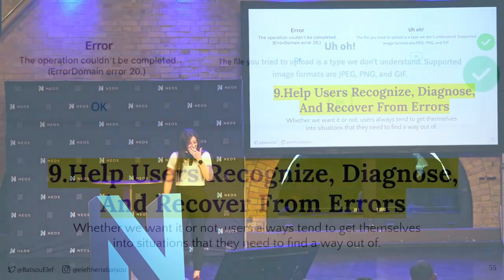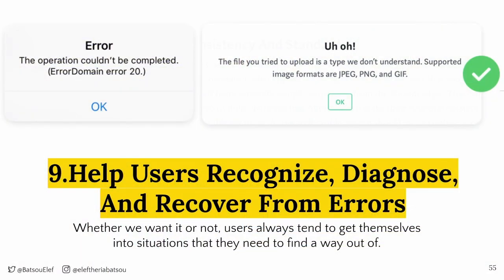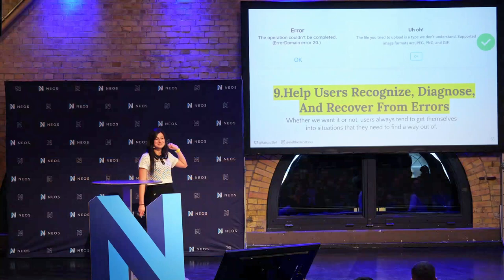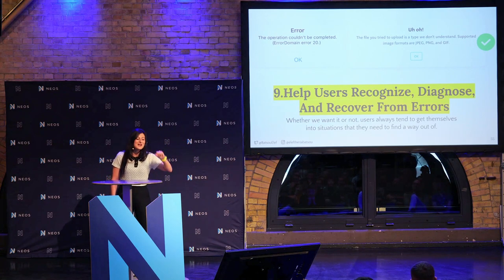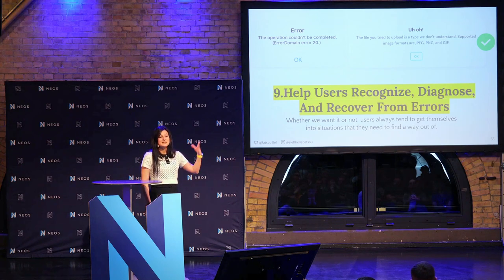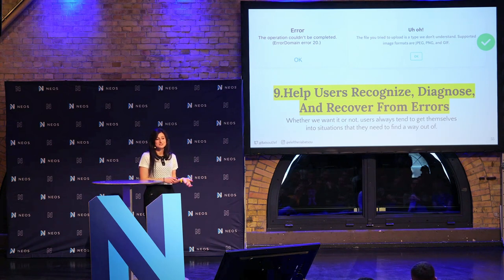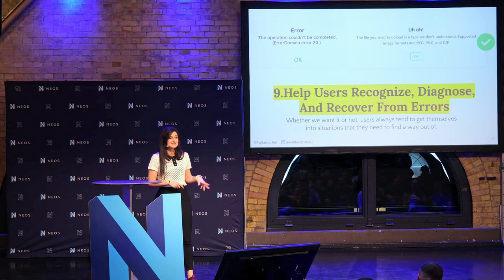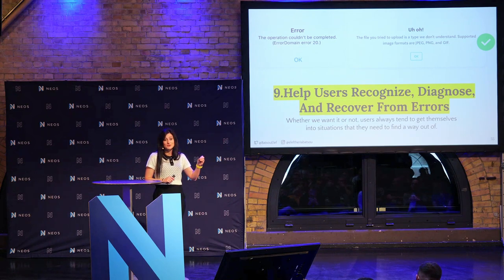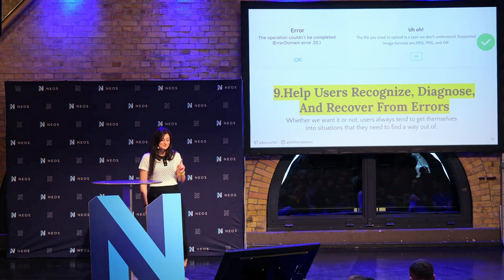The ninth rule is help users recognize, diagnose, and recover from errors. Our users will make mistakes either we want it or not — let's help them find the right way. For example, if a user tries to upload a PNG but we don't accept PNGs, we can say 'you tried to upload a PNG, I cannot accept that — try this format instead.' Or even better, have a panel for upload that says upfront 'I only accept these formats,' so the user won't even make the first mistake.